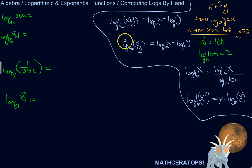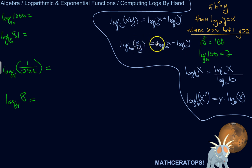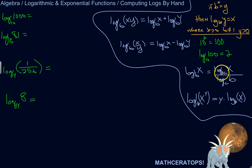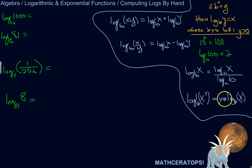If you remember that, plus some basic properties: the log of a product of two numbers is equivalent to the log of one number plus the log of the other number. Similarly, log of a quotient is equivalent to log of the numerator minus log of the denominator. We've also got the change of base property, and if you're taking the log of a number raised to a power, that's equivalent to that power times the log of just that number. We can use these properties to calculate some simple logs by hand.